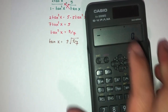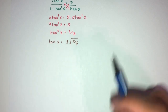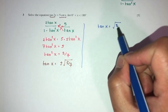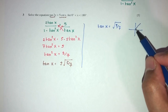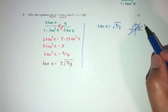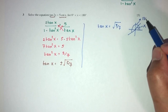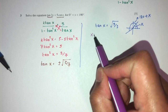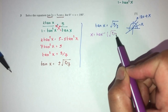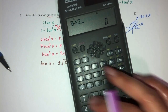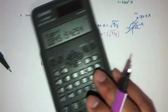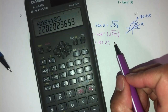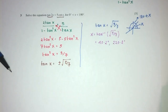Looking at the positive value first: tan(x) = +√(5/7). When tan is positive, it's in the first and third quadrants. The reference angle is tan⁻¹(√(5/7)) = 40.2°. So x = 40.2° and also x = 180° + 40.2° = 220.2°. That gives us two values from the positive case.